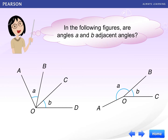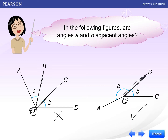So are the following angles adjacent angles? A and B — are they adjacent angles? On the left-hand side, A and B have a common vertex O, but they do not have a common arm, so this is not adjacent. For the right-hand side, O is the common vertex, and OB is the common arm of A and B. So A and B are adjacent angles.